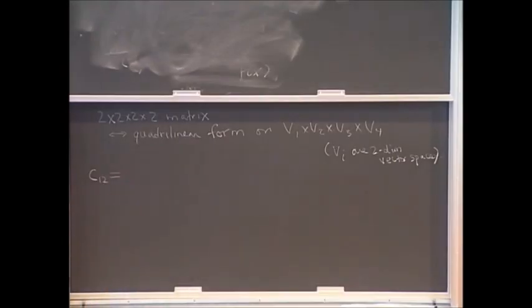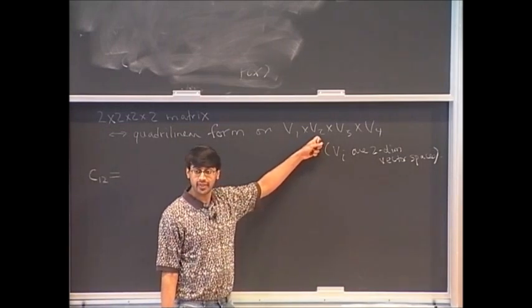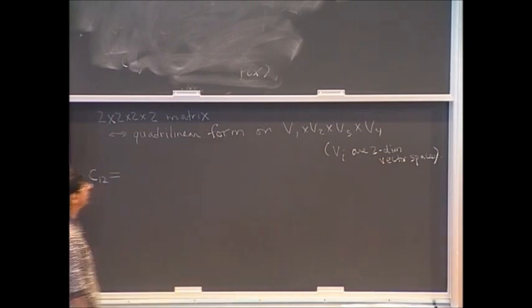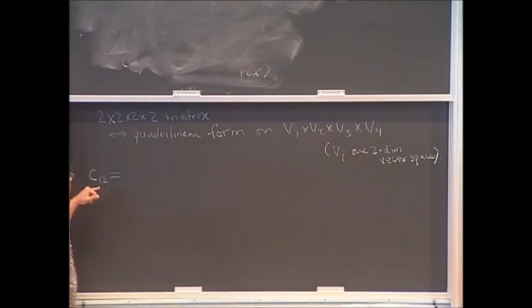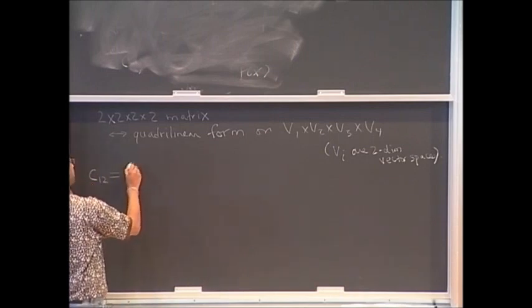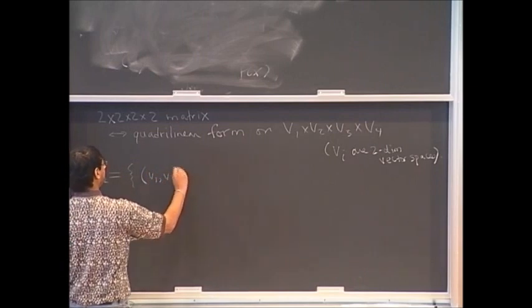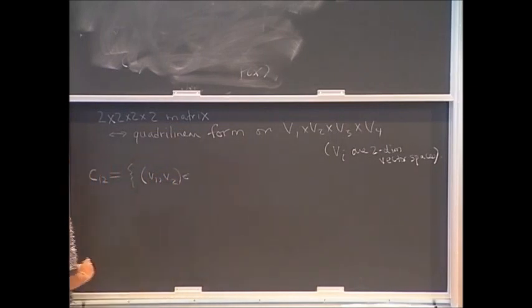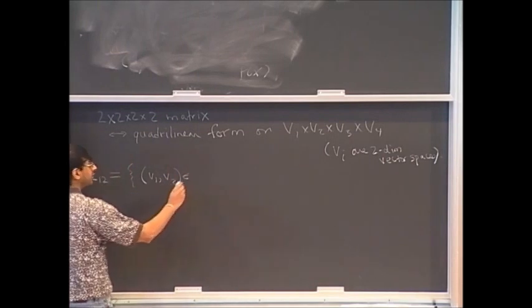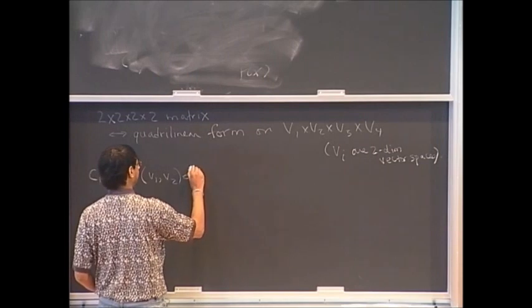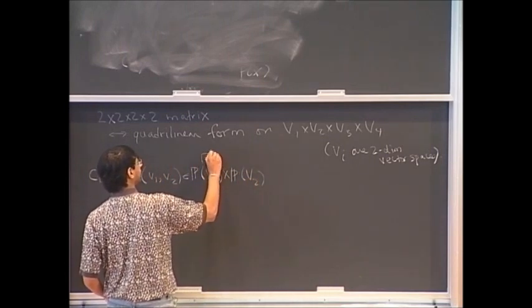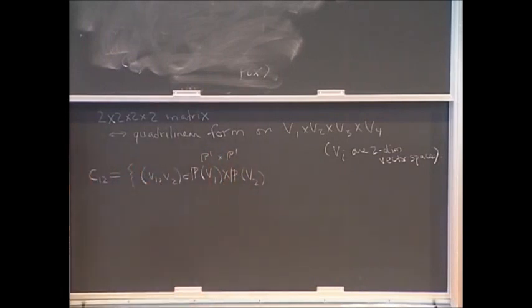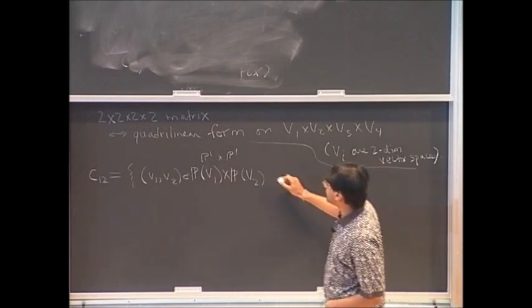So if we have a quadrilinear form on a product of four two-dimensional vector spaces, then one can define a set C12 in PV1 cross PV2. PV1 is like a projective line, PV2 is a projective line — so the projectivization of these vector spaces. If you take the product PV1 cross PV2, we're going to define a genus one curve inside that product. So C12 is going to be a set in P1 cross P1.